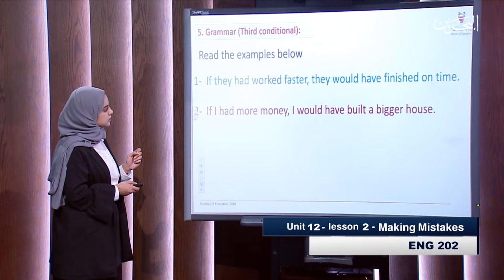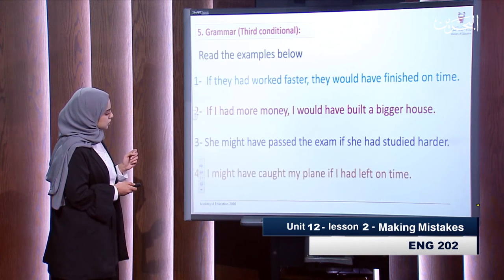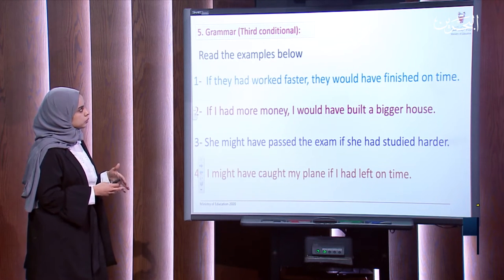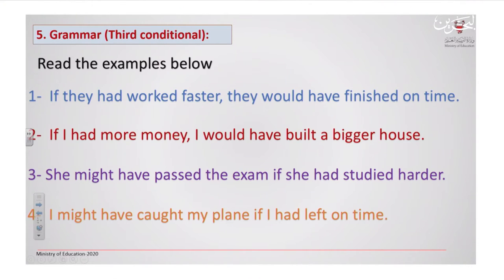Now, let us read the examples here, and then we will learn more about the third conditional rule. The first sentence: if they had worked faster, they would have finished on time. If I had more money, I would have built a bigger house. The third sentence: she might have passed the exam if she had studied harder. The fourth one: I might have caught my plane if I had left on time.